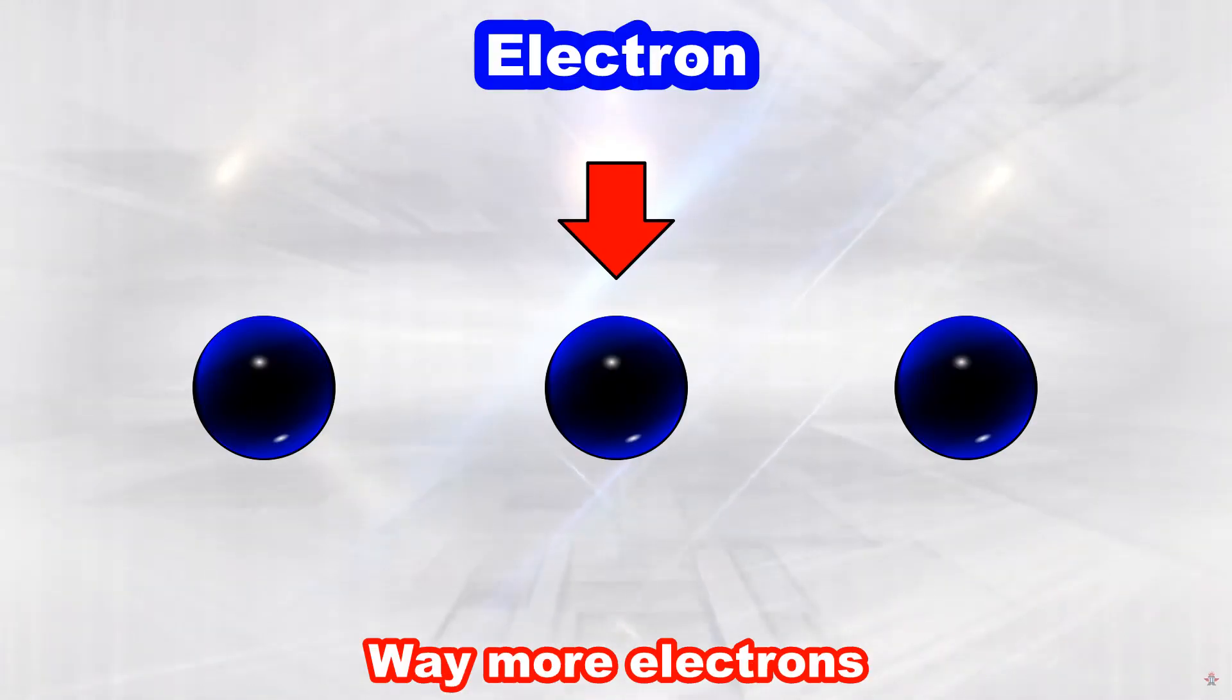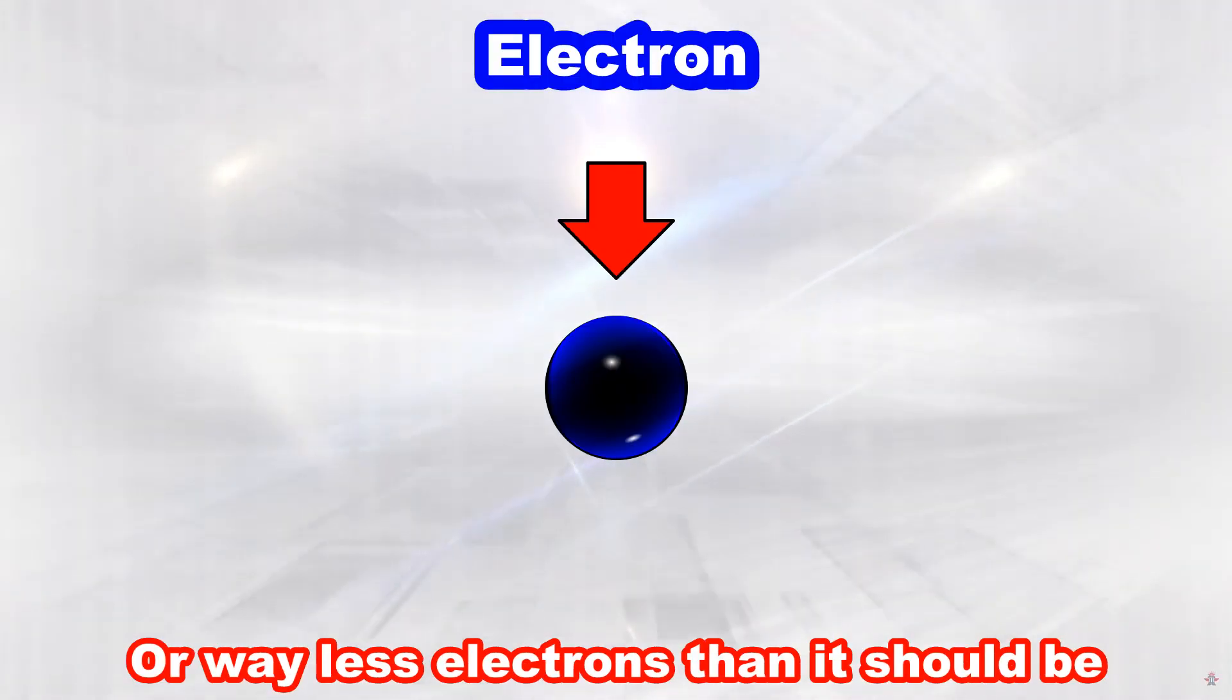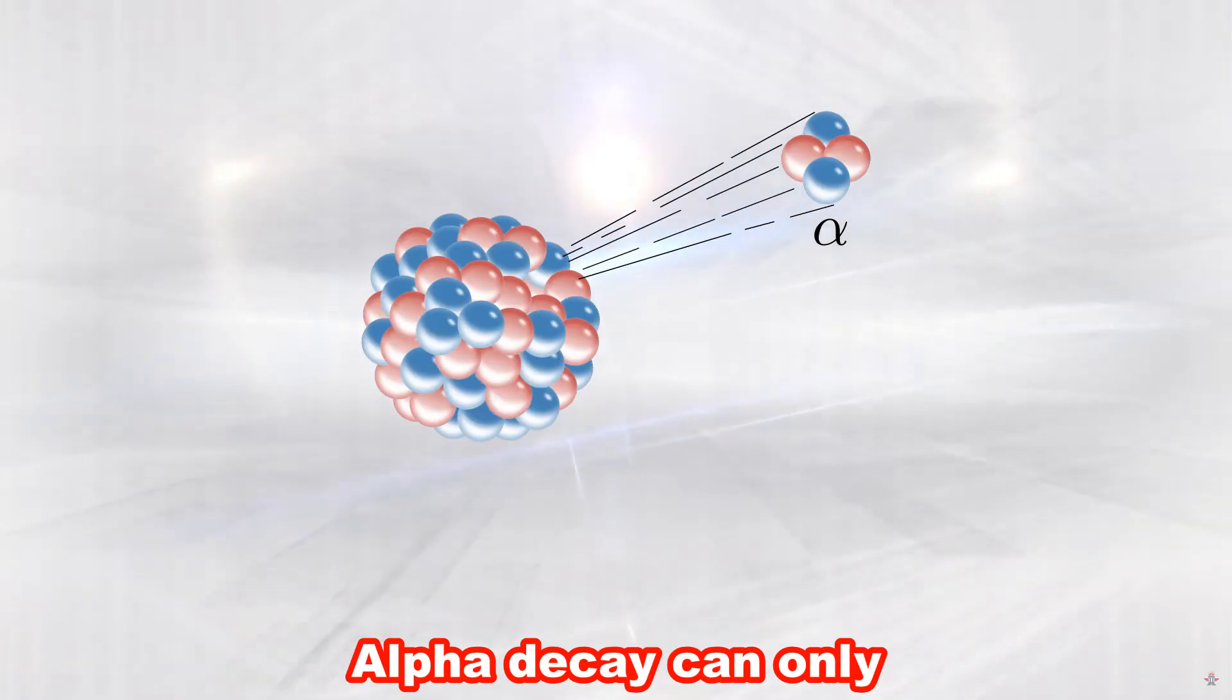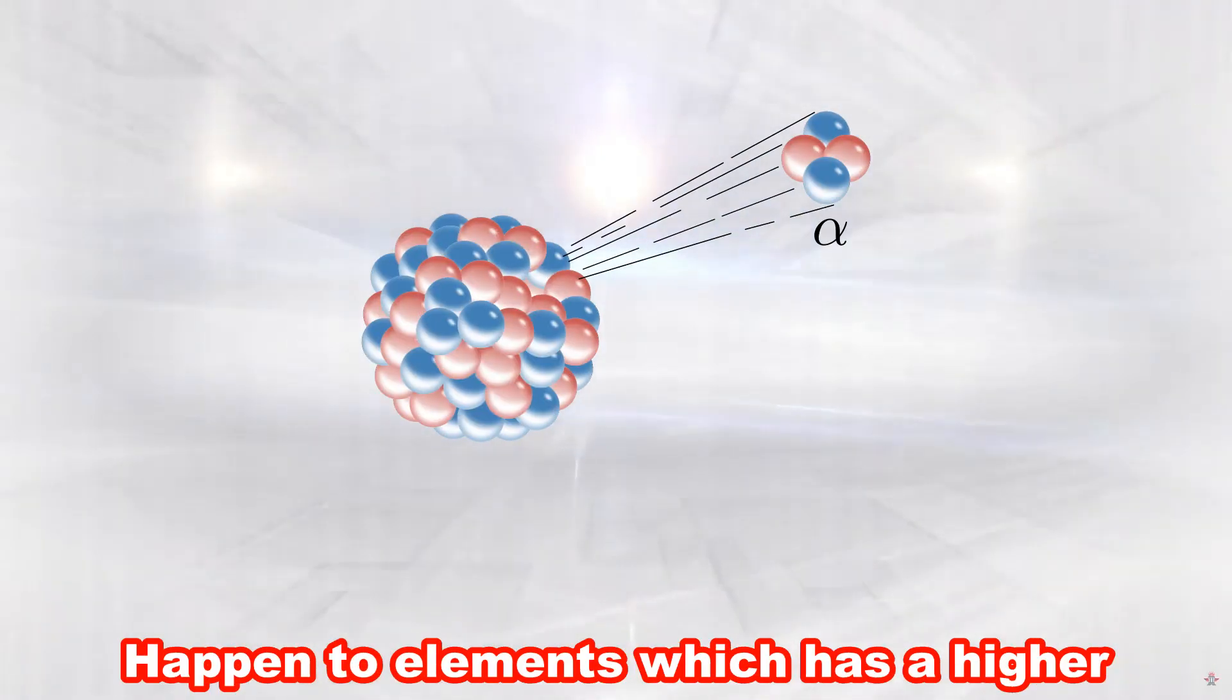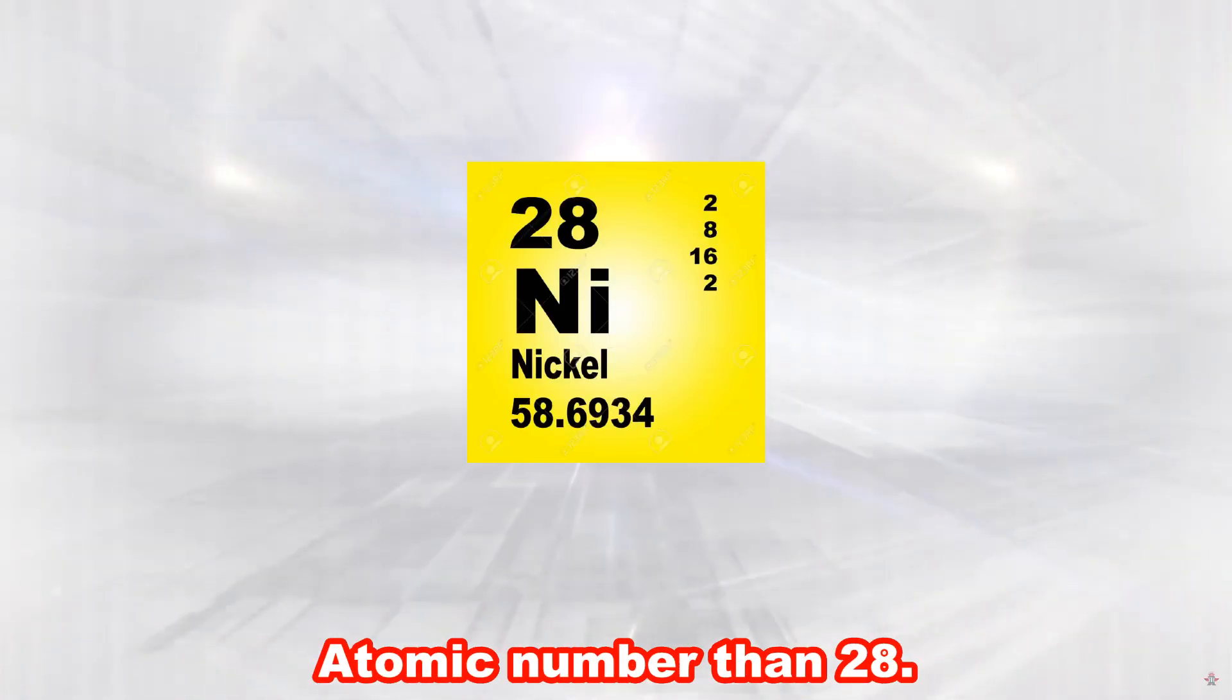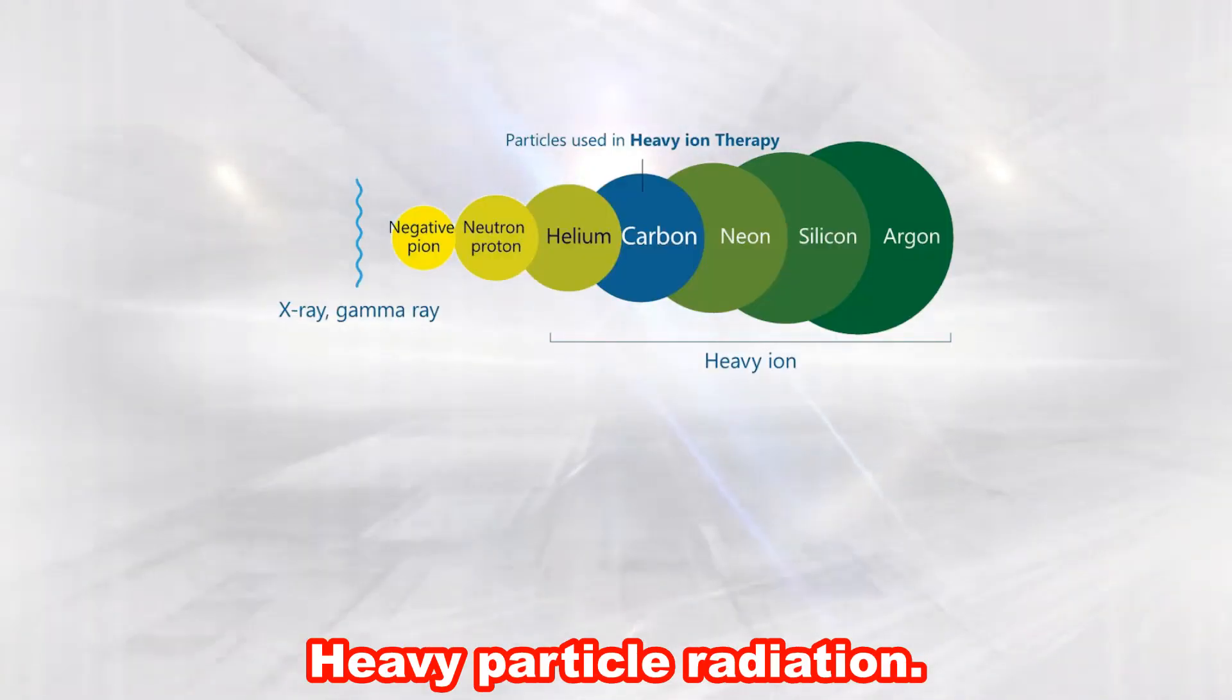Unstable meaning that there are way more electrons or way less electrons than it should be. Alpha decay can only happen to elements which has a higher atomic number than 28. It is the most common heavy particle radiation.